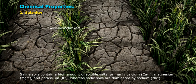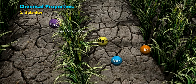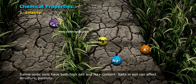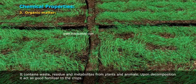Salinity: Saline soils contain a high amount of soluble salts, primarily calcium (Ca2+), magnesium (Mg2+), and potassium (K+). Sodic soils are dominated by sodium (Na+). Saline-sodic soils have both high salt and Na+ content. Salts in soil can affect structure and porosity.